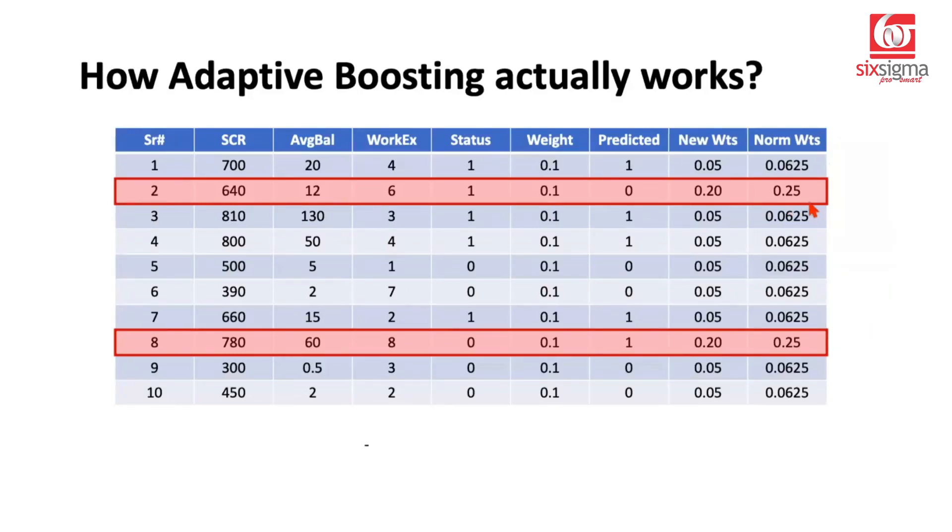This has been done just for one weak learner. Now this data that we have will be resampled. We will select options with replacement and that will be given as an input to the next weak learner or decision stump. Because these options have been assigned a higher weightage in the resampling piece, these options have a higher chance of getting selected. Which means the resampled data would have abundance of these observations which were misclassified. And that data will be given as an input to the next weak learner, which in turn would repeat the same step.